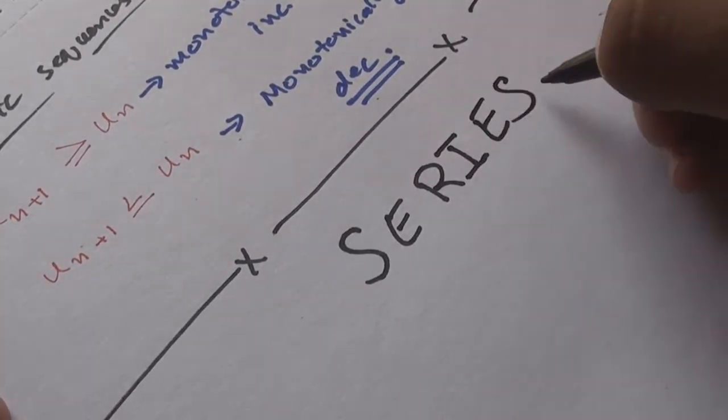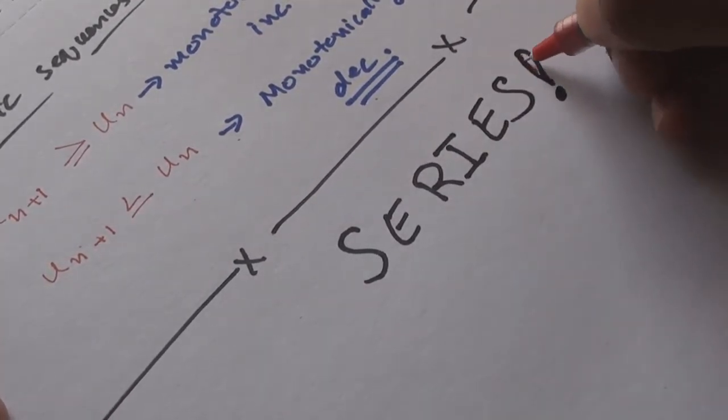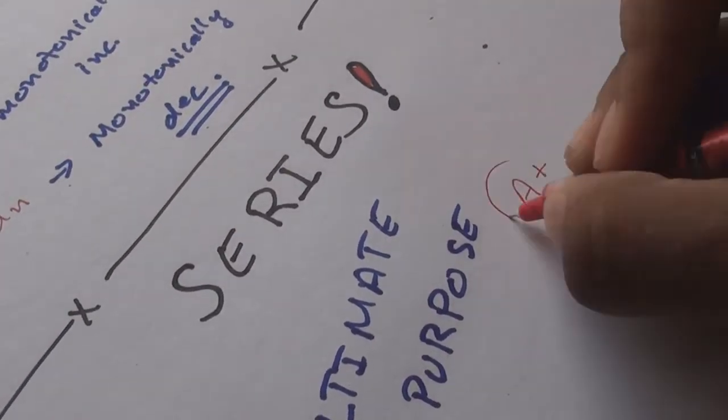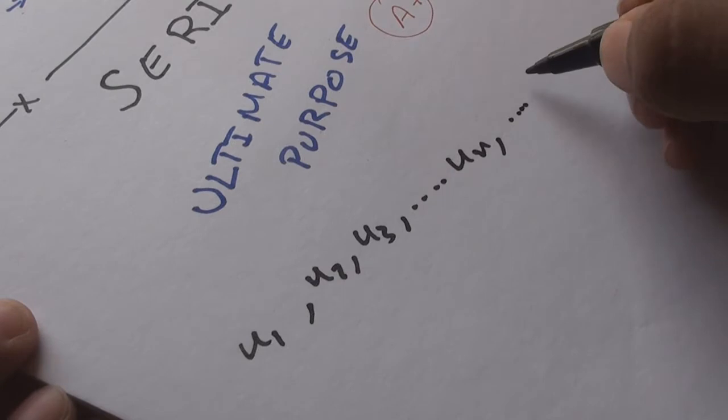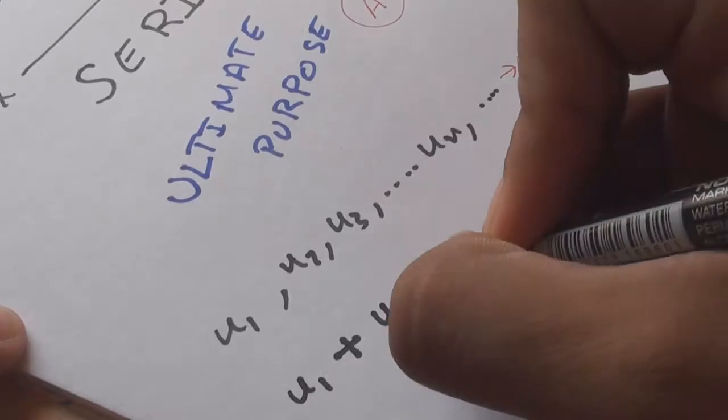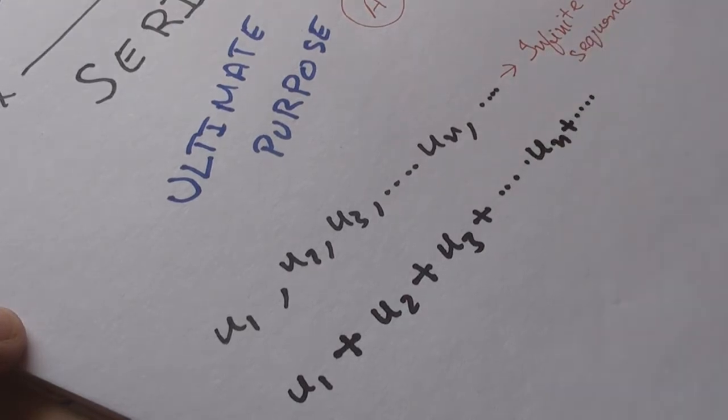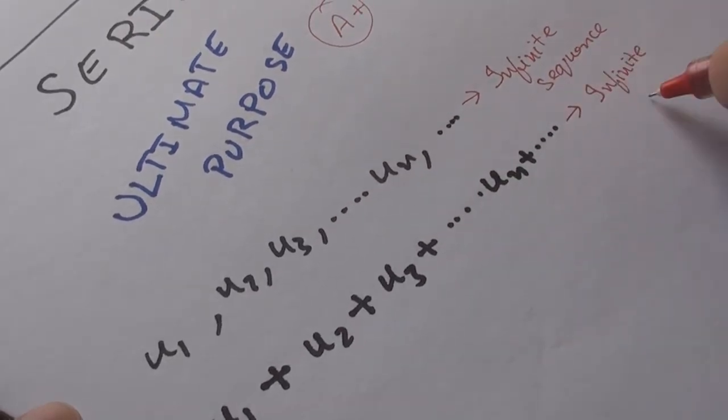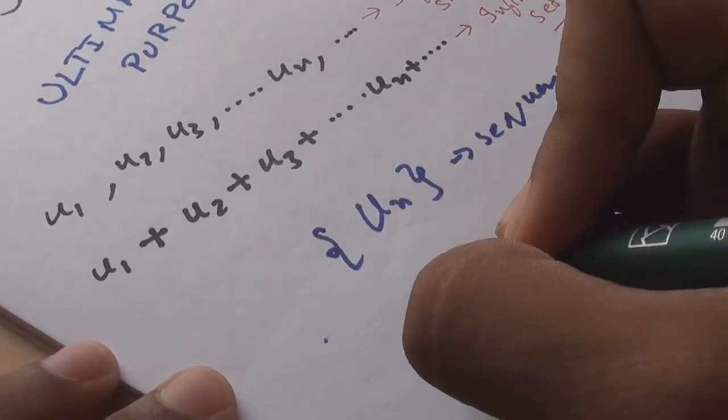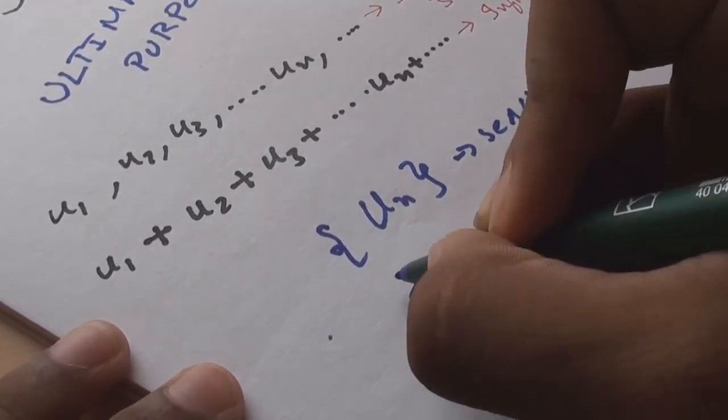Series: Don't get confused with sequences. It is series that really matter in life, that serve the ultimate purpose of fetching your good grades. Series just makes sequences of real numbers look cooler. If u1, u2, u3, un and so on is an infinite sequence, then u1 + u2 + u3 + un and so on is an infinite series. Remember how we denoted sequences with {un}?